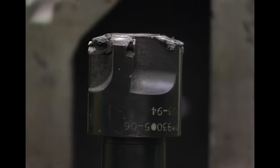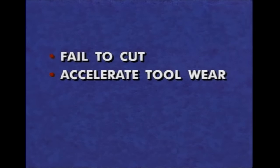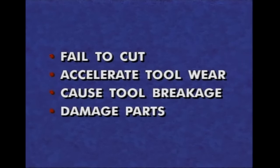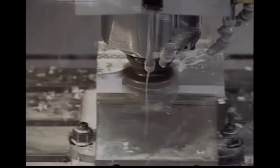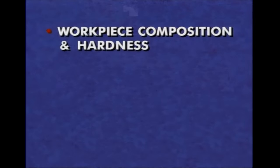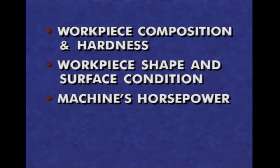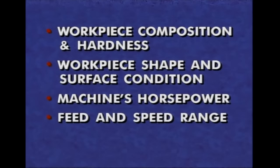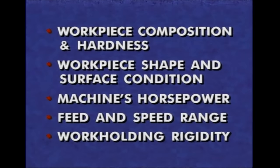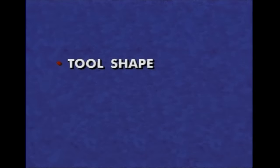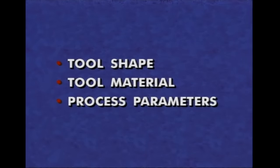Using the wrong cutting tools for a given operation may cause the tool to not cut at all, wear the tool out too quickly, break the tool, damage a workpiece, or fail in other ways. Before final selection of a cutting tool can be made, certain process parameters must be known, such as the composition and hardness of the workpiece, its shape and surface condition, the machine's horsepower, feed and speed capability, and the rigidity and security of the work holding method. All these variables factor into the selection of tool shape, tool material, and machining process parameters.